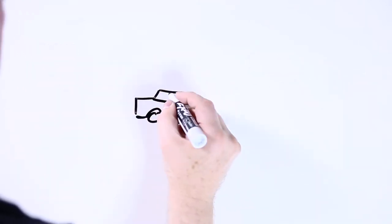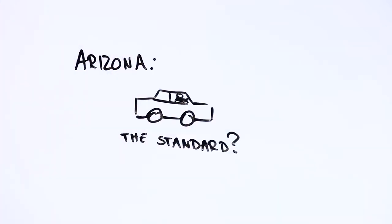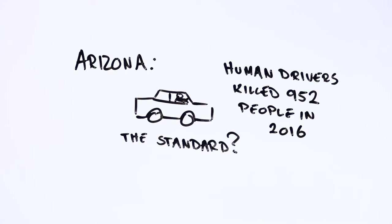Human drivers are a good place to start here, and where better to look than Arizona, where many of these vehicles are currently being tested. It's also, sadly, where the first pedestrian was killed by a self-driving car. In 2016, 952 people were killed in vehicle crashes in Arizona, and many of these were down to human weaknesses.